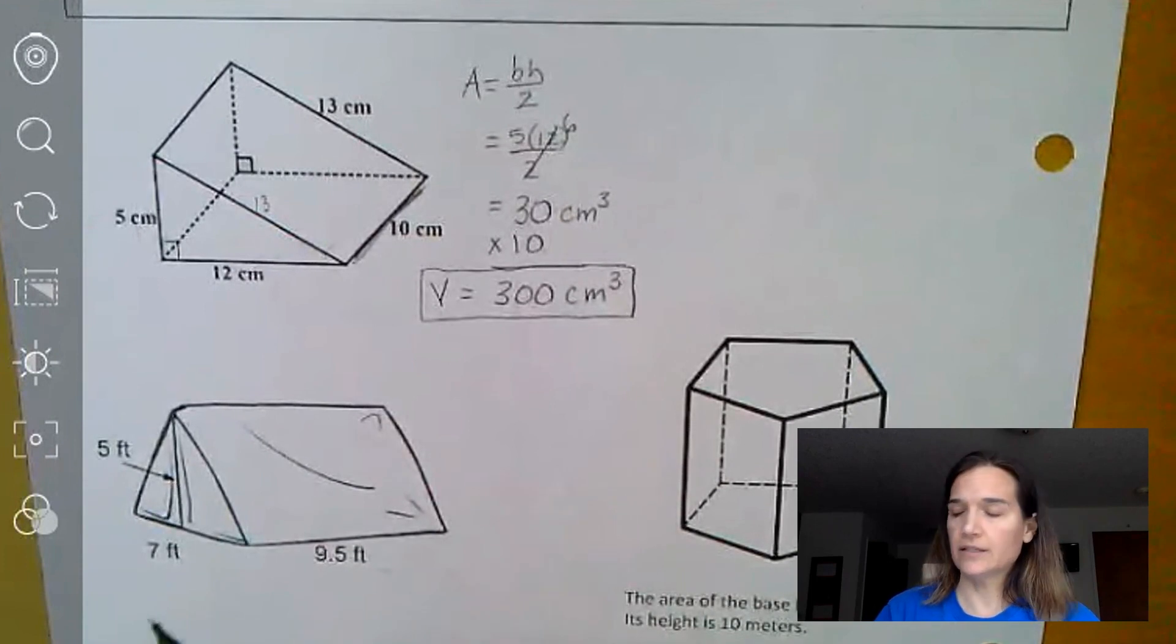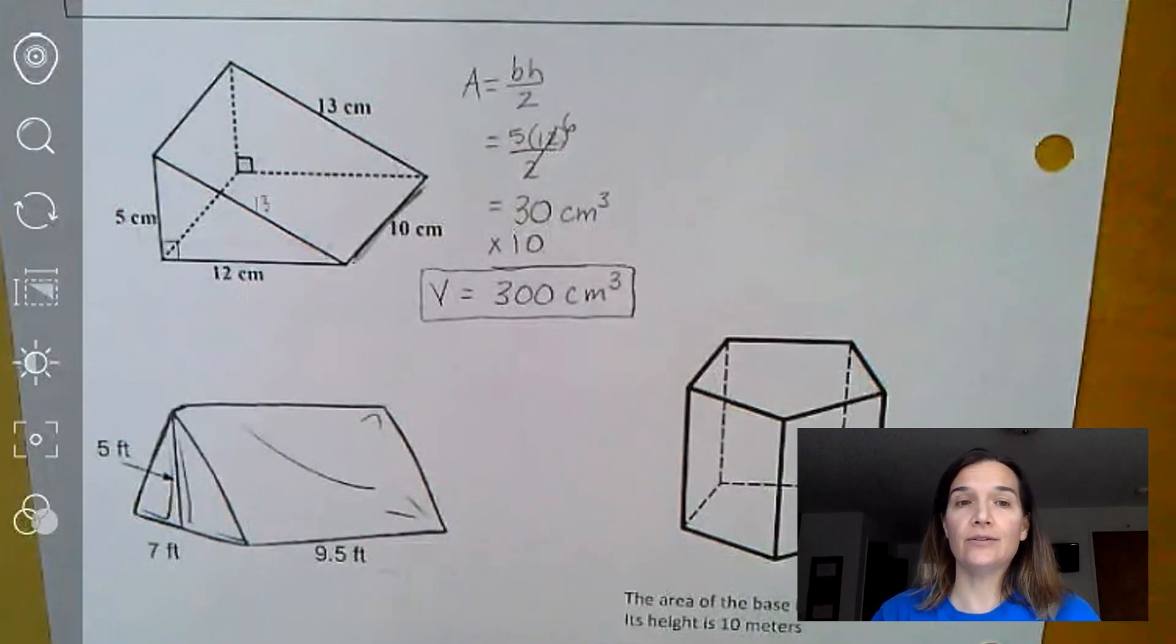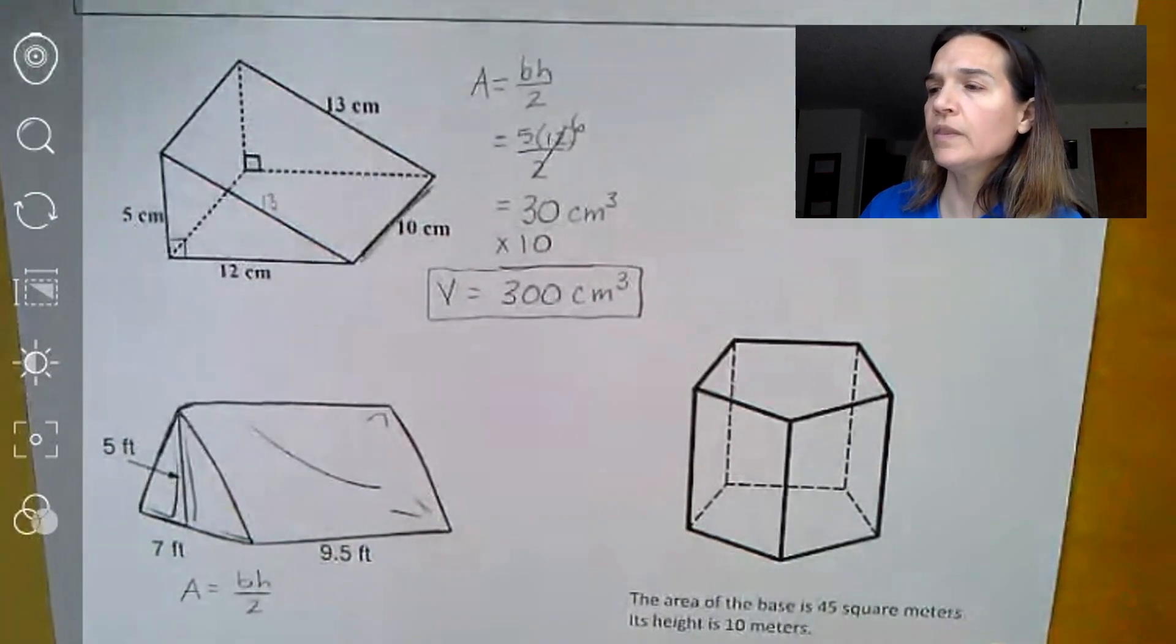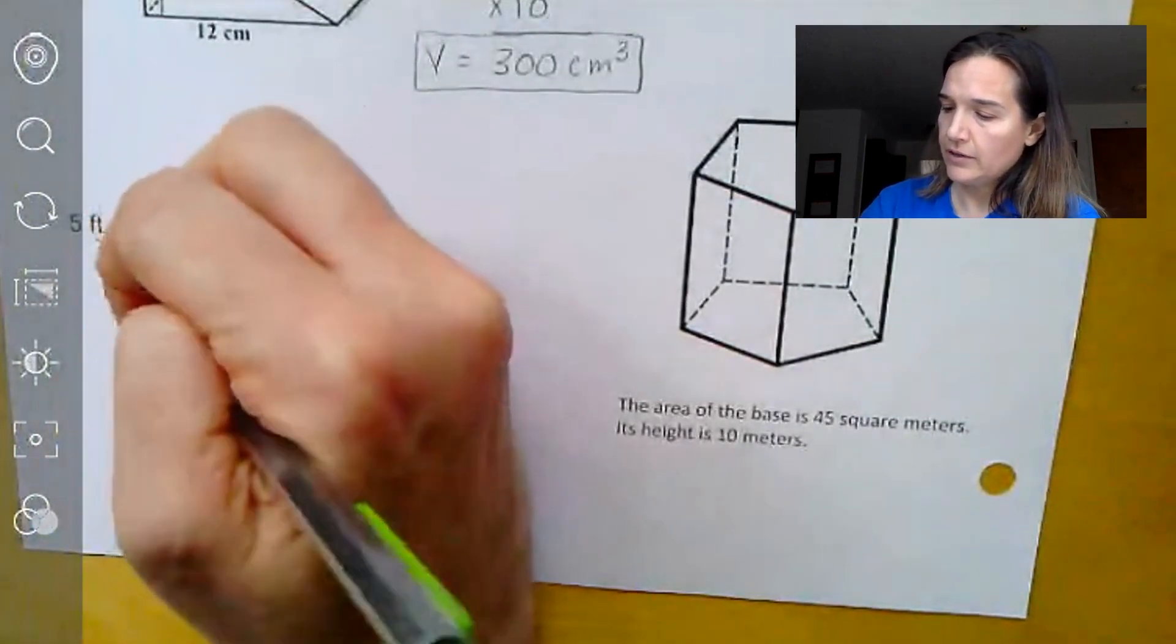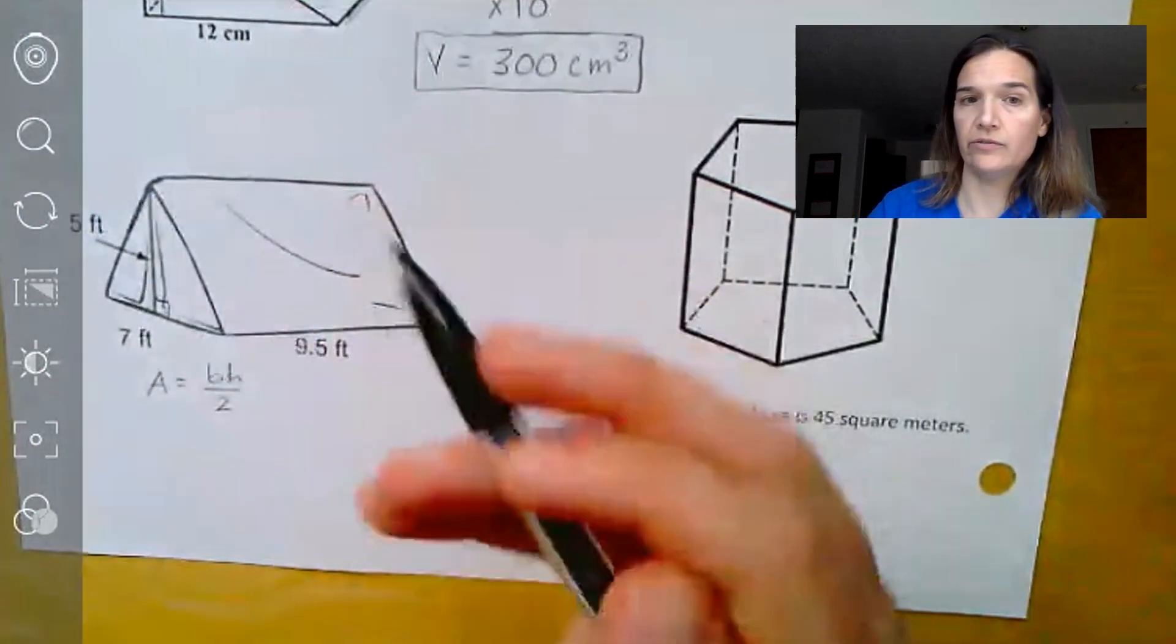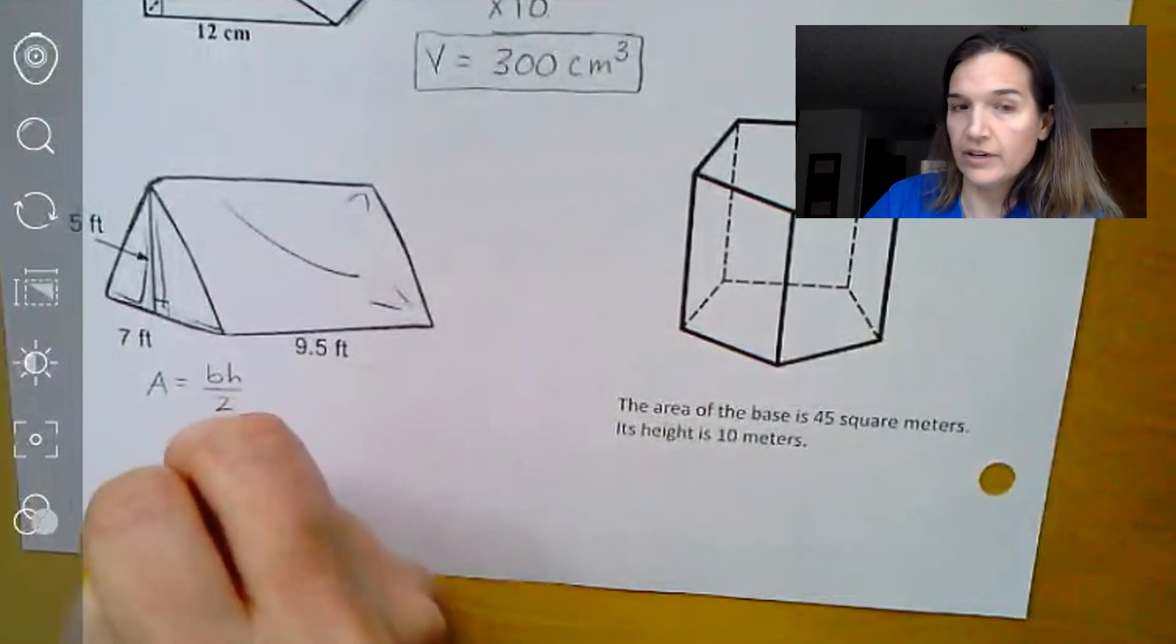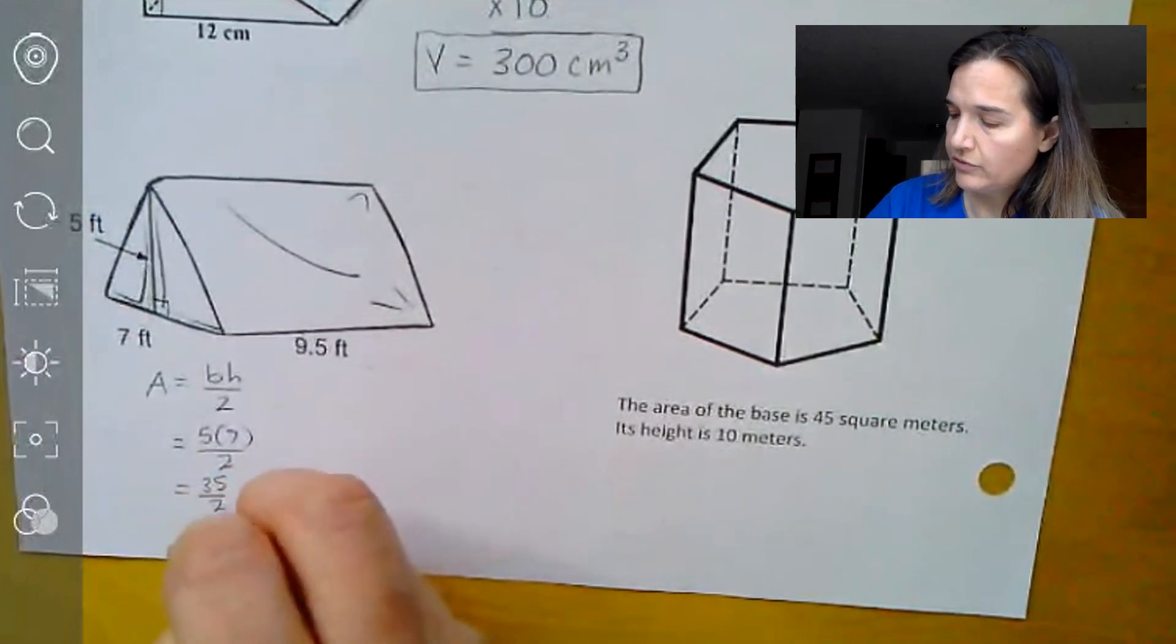On this next one, very similar, it has a triangular side and then a bunch of rectangular sides, in which case we have to find the area of the triangle and then multiply it by the height. So again, we do have a triangle and it's going to be base times height divided by 2, in which case we need to find the base and the height. Notice that right here it makes a right angle. And in that case, our base and our height are connected to that, the 5 feet and the 7 feet. So we'll do 5 times 7 divided by 2. This one, none of them divide neatly, so it's just going to be 35 divided by 2. And in that case, it's going to be 17.5 feet cubed.